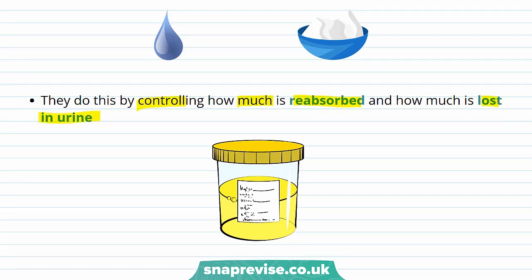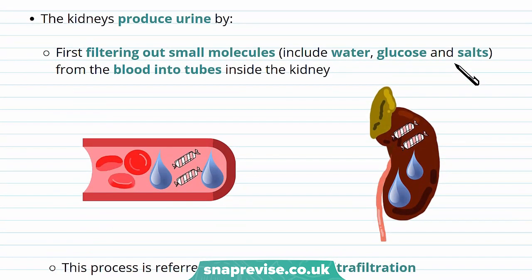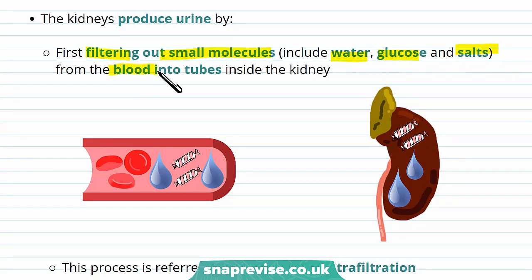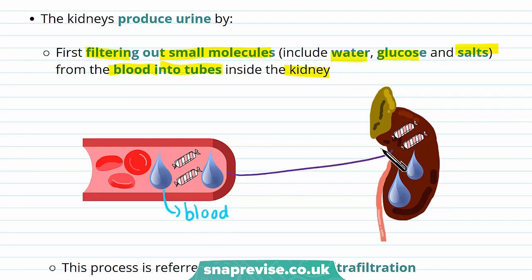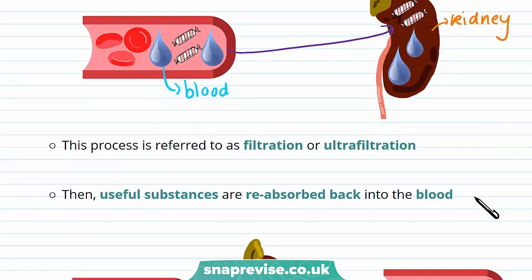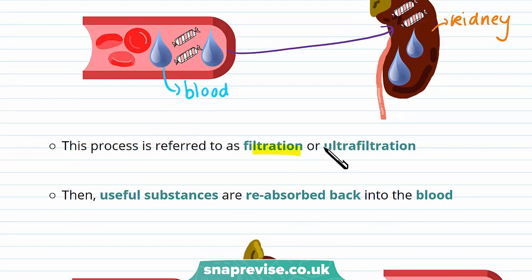So how do they produce this urine? They produce it by first filtering out small molecules — this includes water, glucose, and salts. These molecules are filtered out from the blood into tubes inside the kidney. This process of removing small molecules from the blood is known as filtration or ultrafiltration.